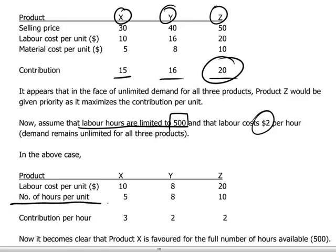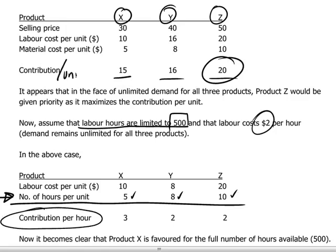What we can do is, on this line here, calculate the number of hours required per unit of product. We can see that the number of hours to produce one unit of X is 5 hours, for Y it's 8 hours, and for Z it's 10 hours. We can now recalculate our contribution — no longer on a per-unit basis, but on a per labor-hour basis: for each hour of labor used, how much dollar contribution do the three products produce?